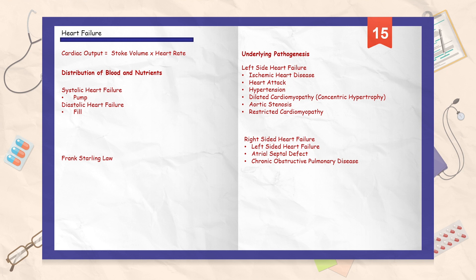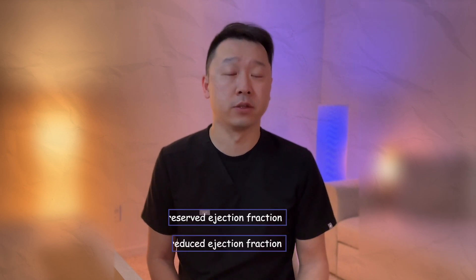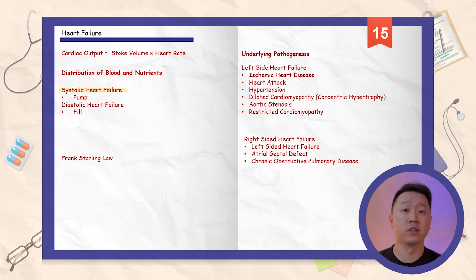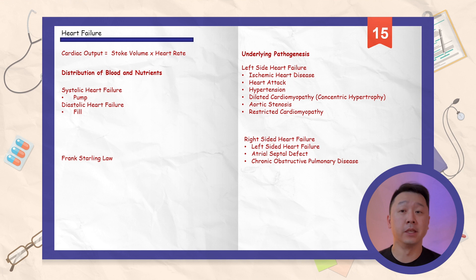The heart's main function is to deliver oxygen and blood nutrients to the rest of the body. Inadequate distribution of blood to the rest of the body is known as heart failure. There are two types: preserved ejection fraction and reduced ejection fraction. The blood flow process involves filling, known as diastole, and contraction, known as systole. Failure of either can decrease cardiac output through decreased stroke volume — the blood pumped out of the left ventricle during each systolic contraction.